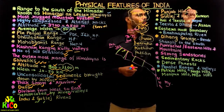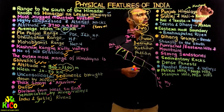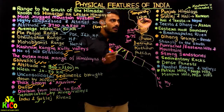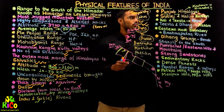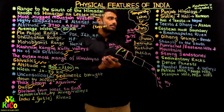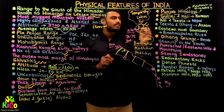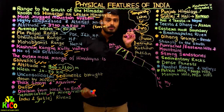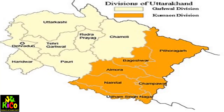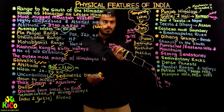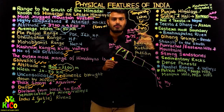Between the Satlaj and Kali rivers, the range is known as the Kumaon Himalaya. This extends from Uttarakhand to Himachal Pradesh, with most of the part being in Uttarakhand itself, covering its various districts. Some part extends into Himachal Pradesh as well.